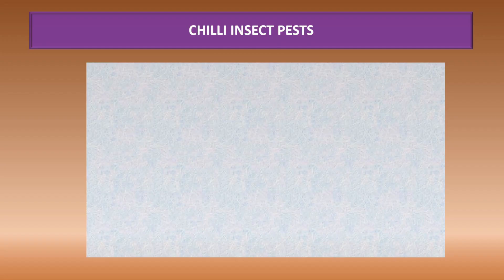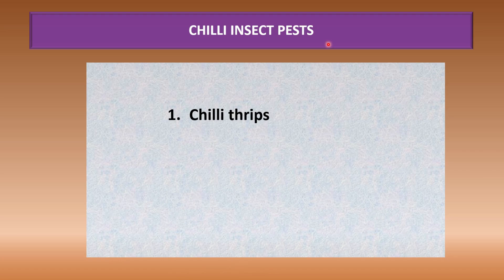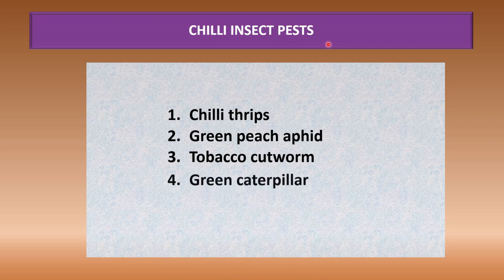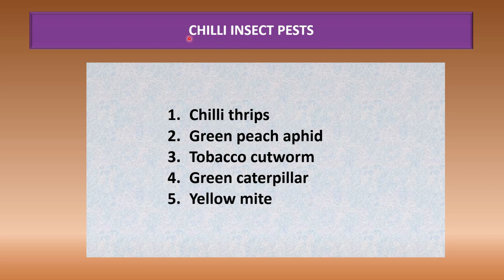Before going to the video, if you want to refer to the video PPT, the link is in the description box. Let us discuss about the chili insect pests — what are the important chili insect pests which are destroying the crop and reducing the profit. The first one is chili thrips, second is green peach aphid, tobacco cutworm, green caterpillar, and yellow mites. These are the major pests making major damage to the crop.